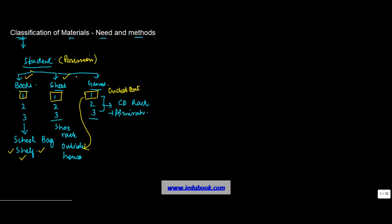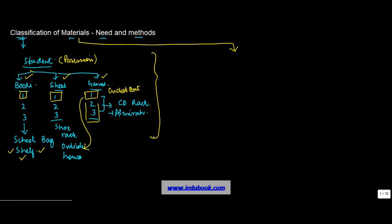So what we do in our life is we classify various things — various possessions — into different categories. We classify them as books, as shoes, as games, and then give each a particular kind of treatment. Why? Because they have different characteristics, different needs. Similarly, there is a classification of material. The need for classification of material arises from the fact that different materials possess different characteristics, and according to those characteristics, their uses are different.